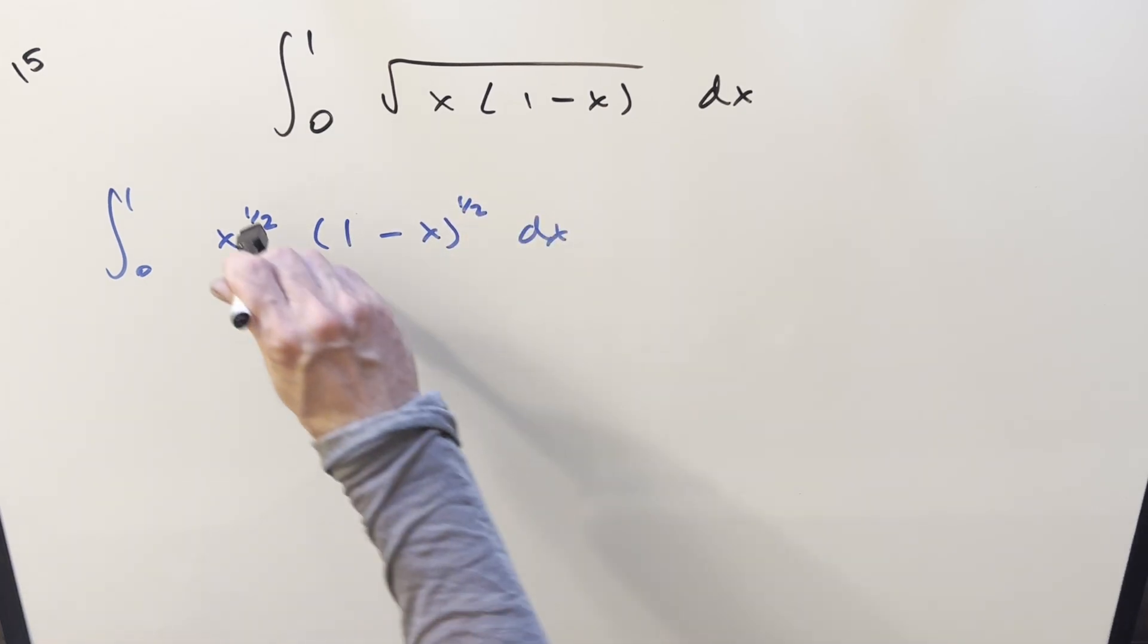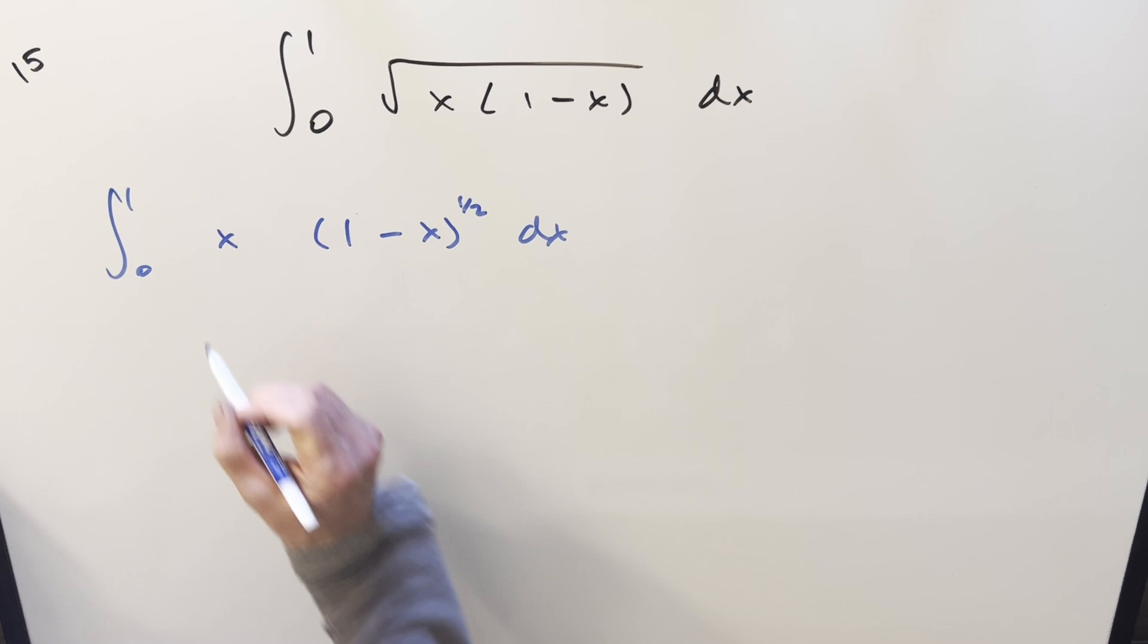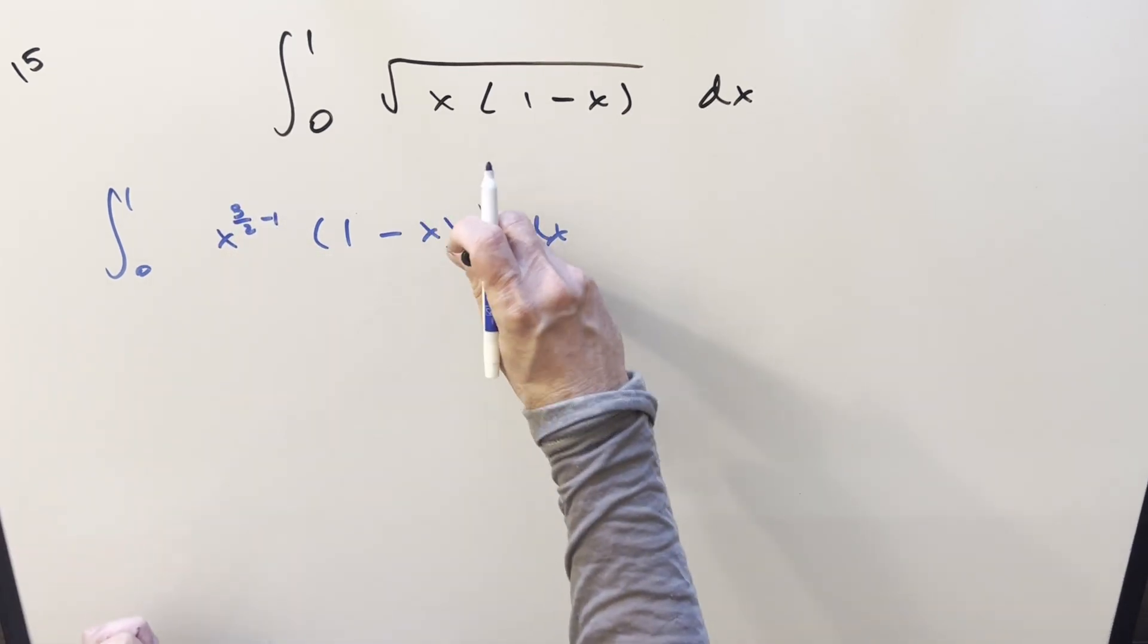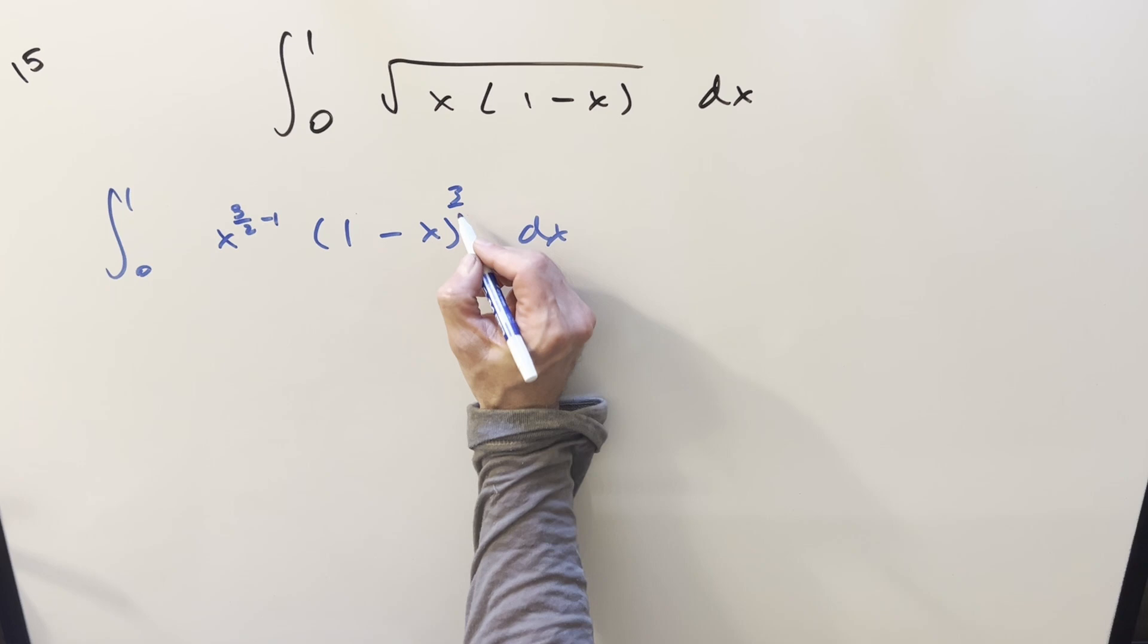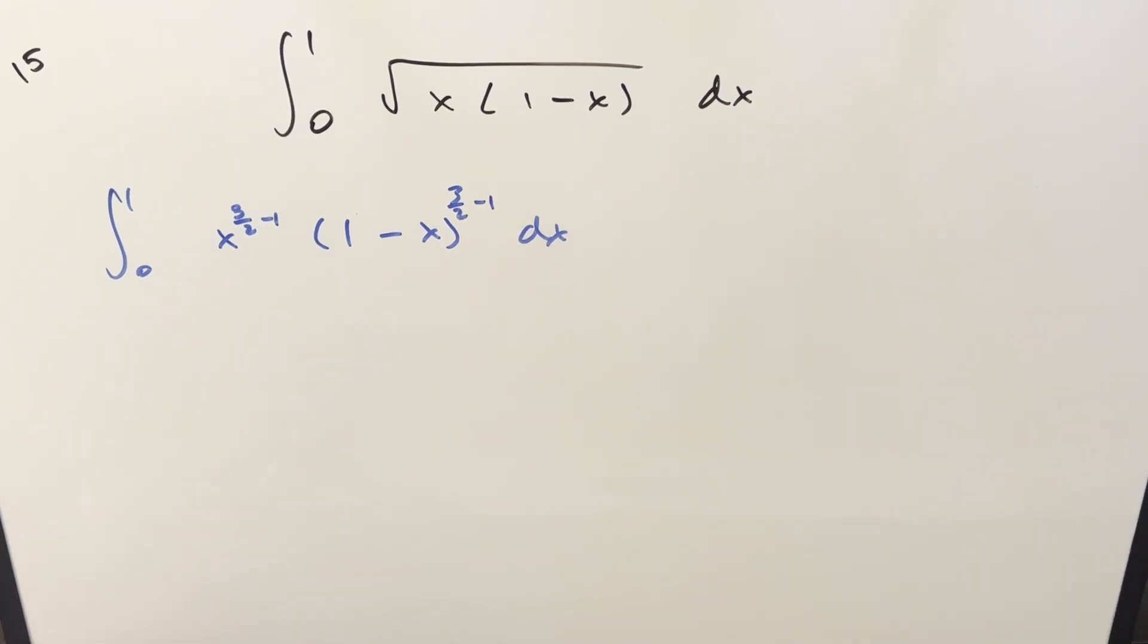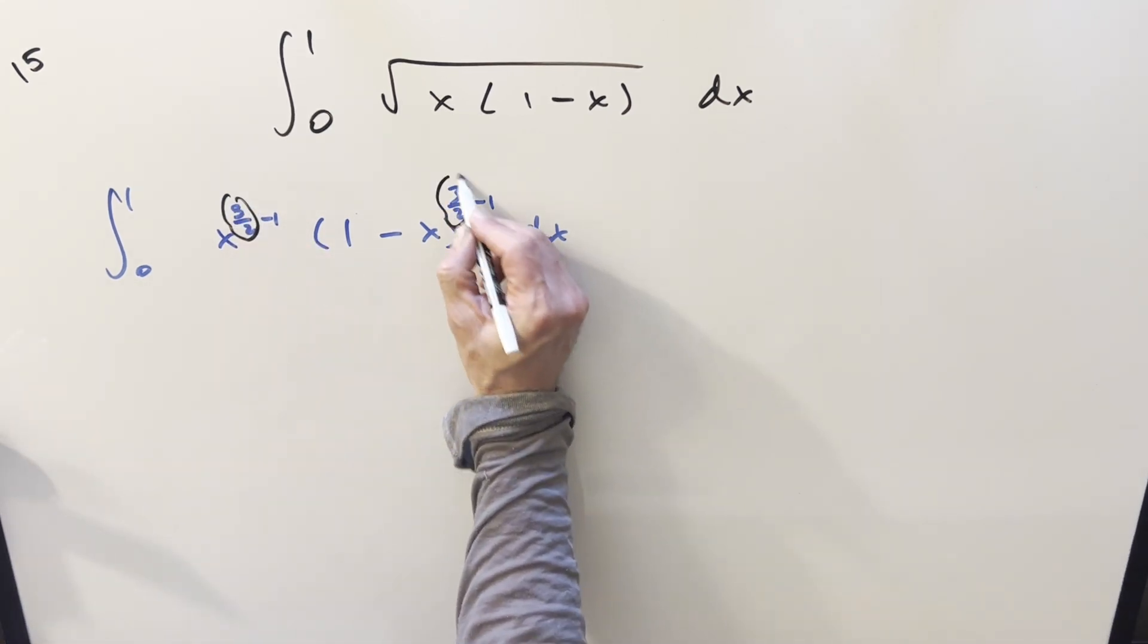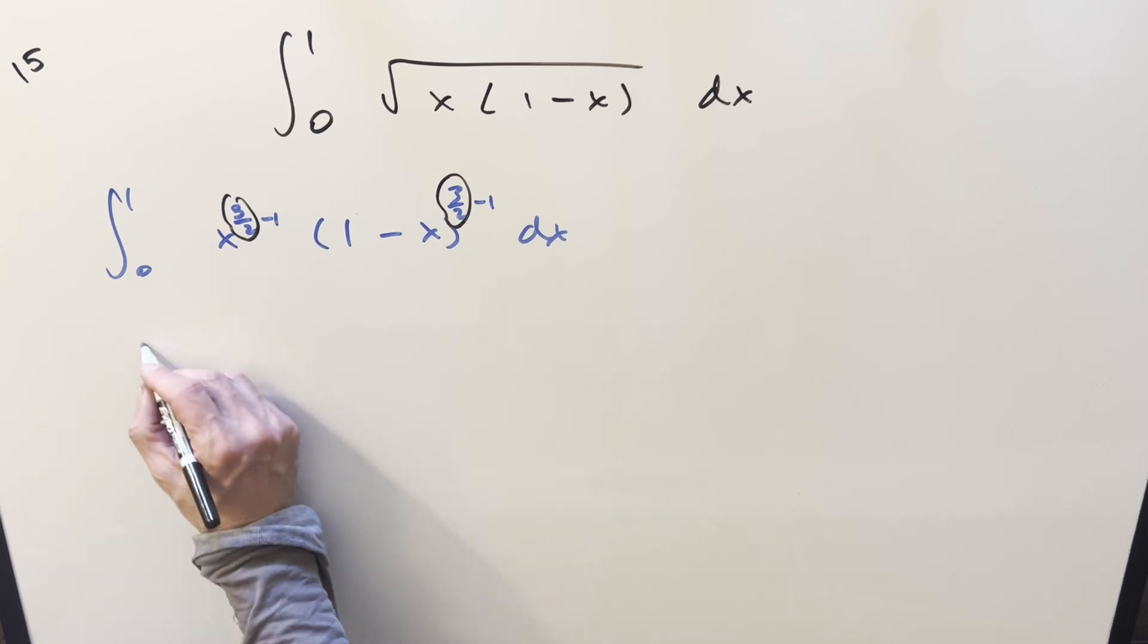And really what I want to do is write these exponents like 3 halves minus 1, and the same thing over here, 3 halves minus 1. And then what we notice is it's perfectly set up to use the beta function on it, where the inputs are going to be here and here. Let's just look at the formula for the beta function really quick.